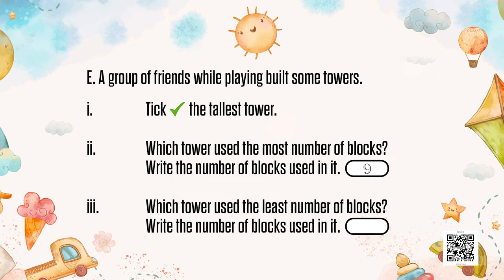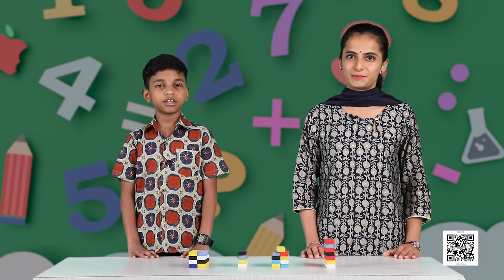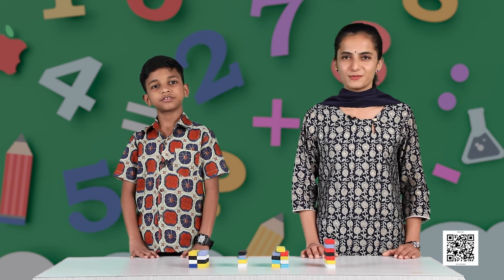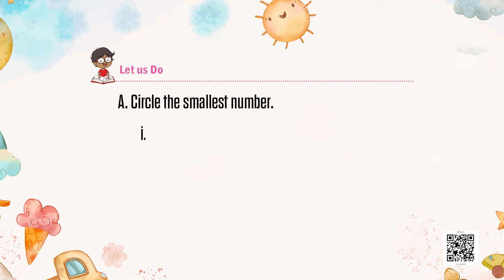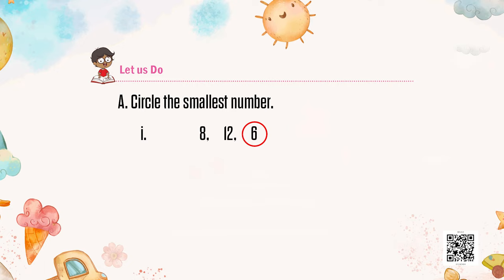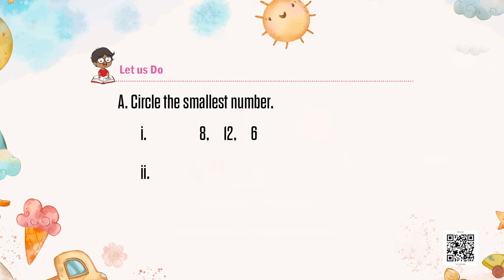After this fun-filled block game, let us move ahead and do a few more activities. We have to find and encircle the smallest number. The first group has 8, 12, and 6. Which is the smallest number? 6. Yes, because 6 comes earliest in the counting. For the next group — 14, 11, 19 — this task is to be done by our viewers.